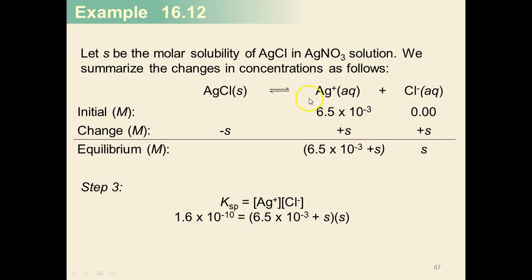So we know initially, before you dissolve any of the silver chloride, the silver ion concentration is going to be equal to that silver nitrate concentration, 6.5 times 10 to the negative third.